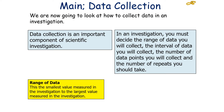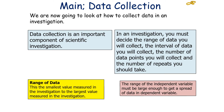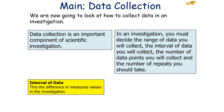The range of data is the smallest value measured in the investigation to the largest value measured. This value must be decided by the experimenter, and the range of the independent variable must be large enough to get a spread of data in the dependent variable. The smallest value must not give a large percentage uncertainty, and the largest value must not be unsafe in your data collection.